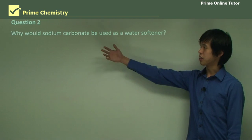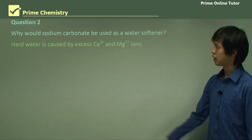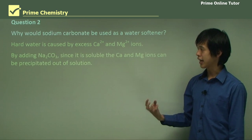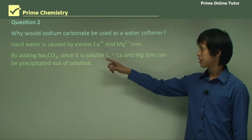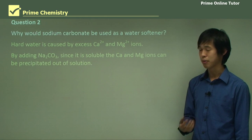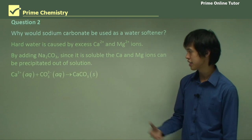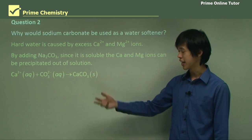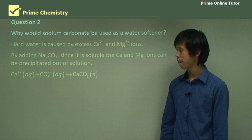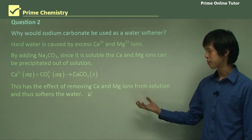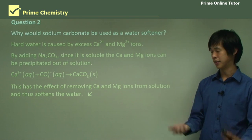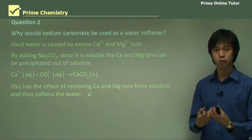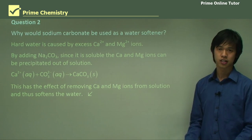So why would sodium carbonate be used as a water softener? Hard water is caused by excess Ca²⁺ and Mg²⁺ ions. By adding Na2CO3, which is soluble, the Ca and Mg ions can be precipitated out of solution. For example: Ca²⁺ + CO3²⁻ → CaCO3 (solid). This removes calcium and magnesium from the solution and thus softens the water — the Ca²⁺ is taken out of the water and becomes solid.